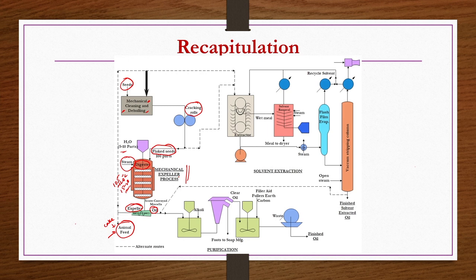From the mechanical extraction process, the crude oil obtained is purified by alkali treatment, removing foots by centrifugation. The clear oil is further taken to an adsorption column to remove remaining impurities, while the foots go to soap manufacturing. After adsorption, any remaining hull or flake particles are removed in a rotary drum filter press, yielding the finished oil.